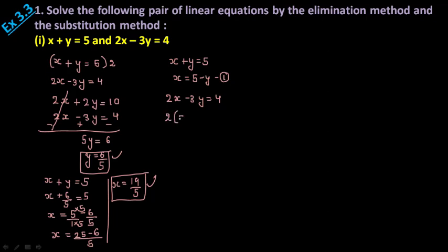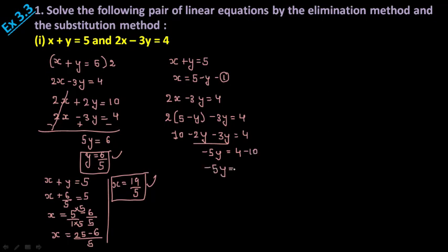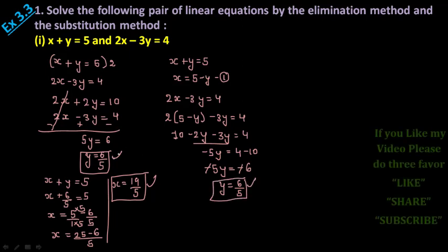Now keep this value of x in the second equation: 2x - 3y = 4. On the place of x, put (5 - y): 2(5 - y) - 3y = 4. This 2 multiplies both terms: 10 - 2y - 3y = 4, giving -5y. Take 10 to the other side: -5y = 4 - 10 = -6. This cancels and you get y = 6/5. You can see the value of y is 6/5 by both methods.